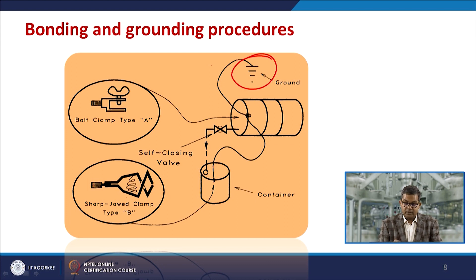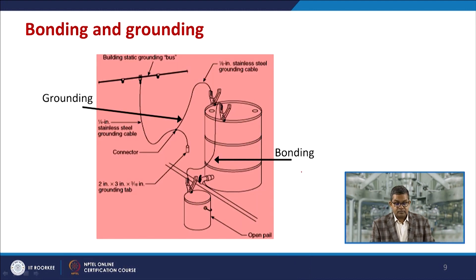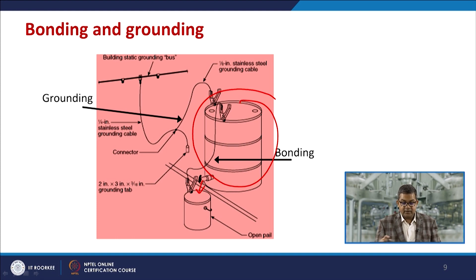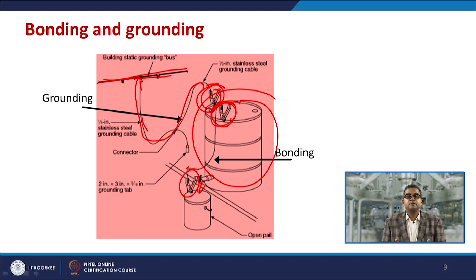A pictorial example shows a properly grounded container where two bolt clamp types A and B are joined together — a best example of bonding and grounding. In another example, a container discharges liquid into a small open pail; the static charge can be eliminated through a static grounding bus. Here two clamps bond the components together and the charge discharge is connected to the bus wire, eliminating the hazard of electrostatic ignition.